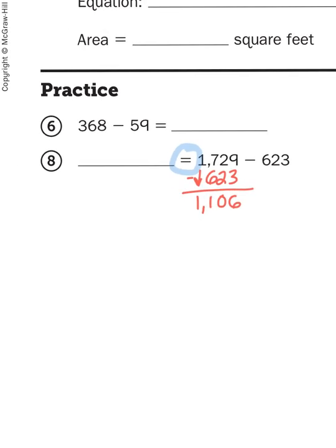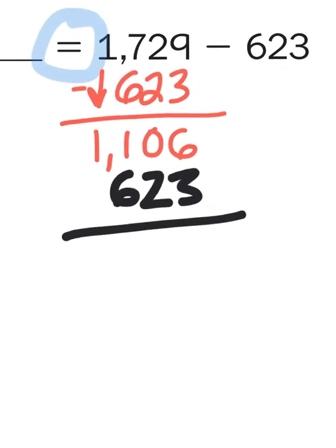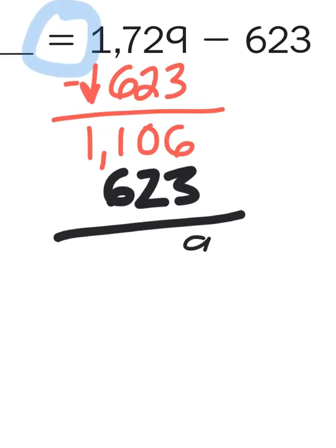Now if I wasn't sure about my answer being correct, all I would have to do is add my second number back to my answer. Let's see if I came up with my first one. 6 plus 3 is 9, 0 plus 2 is 2, 1 plus 6 is 7, bring down the 1,000. Yep, it works.